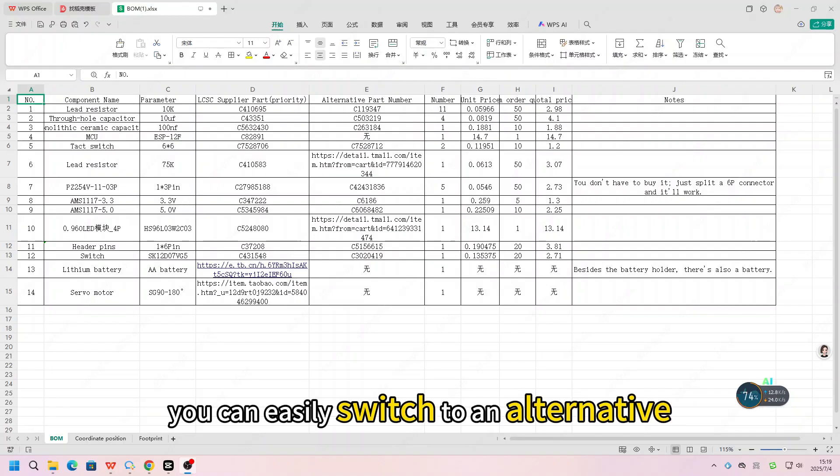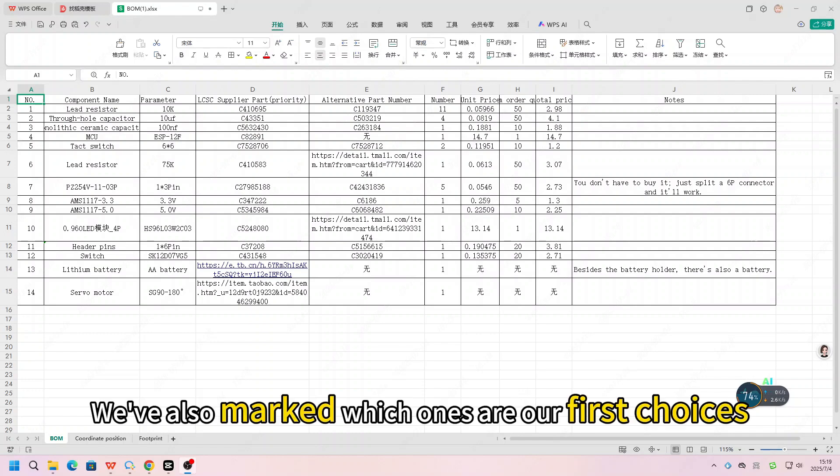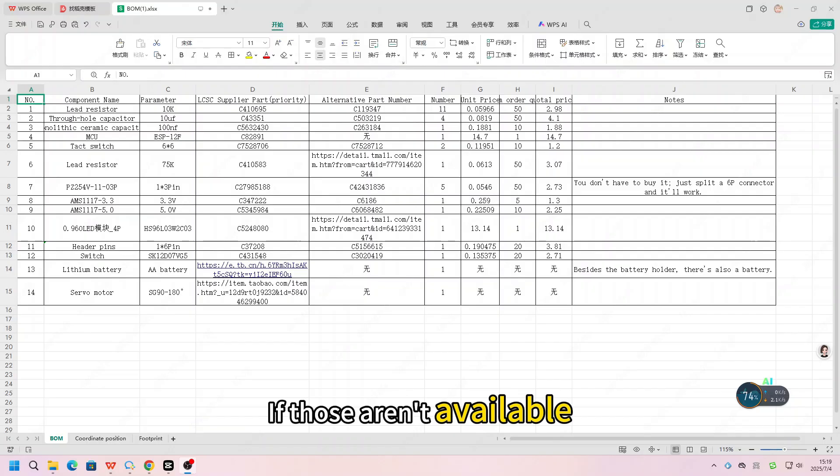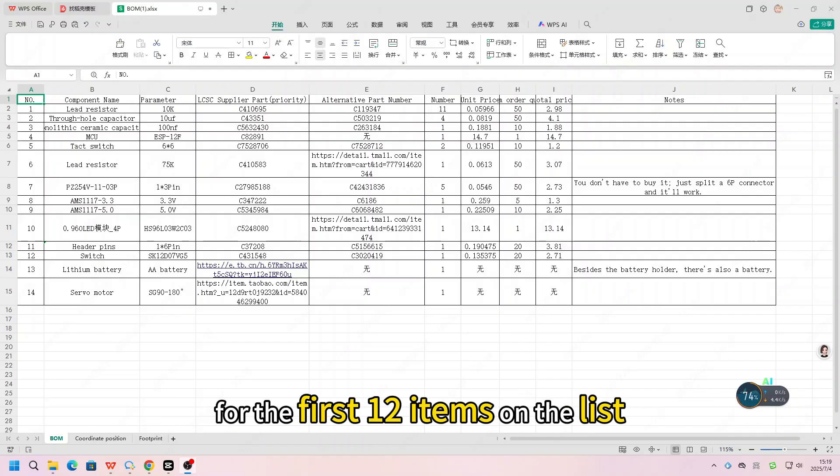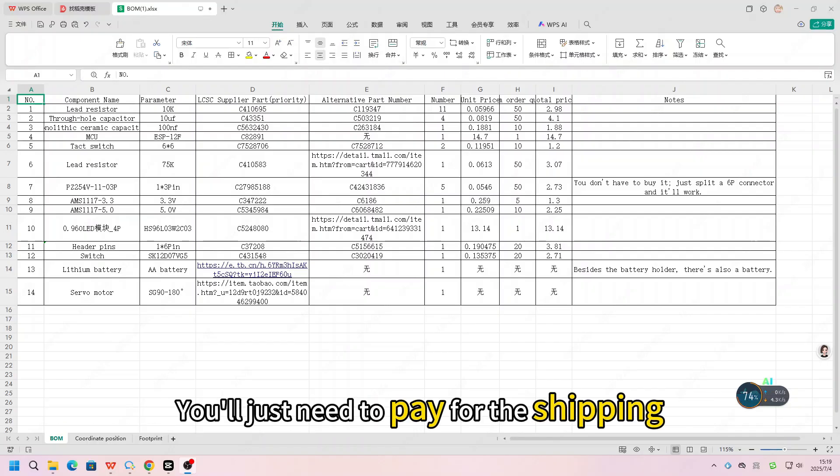We've also marked which ones are our first choices. If those aren't available, no worries, use the backup. Also, we'll send you a coupon that should cover most of the cost for the first 12 items on the list. You will just need to pay for the shipping. Later in the session, we'll go through this list together and find each component one by one.